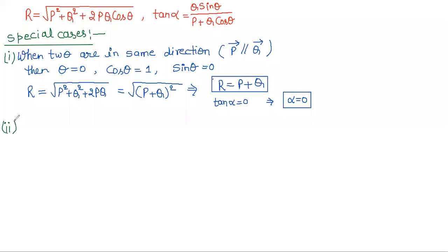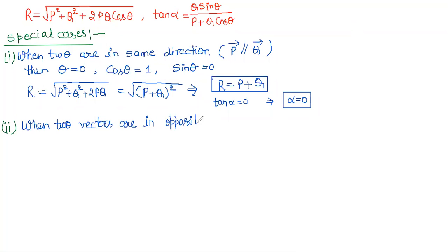Point number two: when two vectors are in the opposite direction — that means they are anti-parallel. In that case, theta is 180 degrees. If theta is 180 degrees, then cos theta equals minus 1.